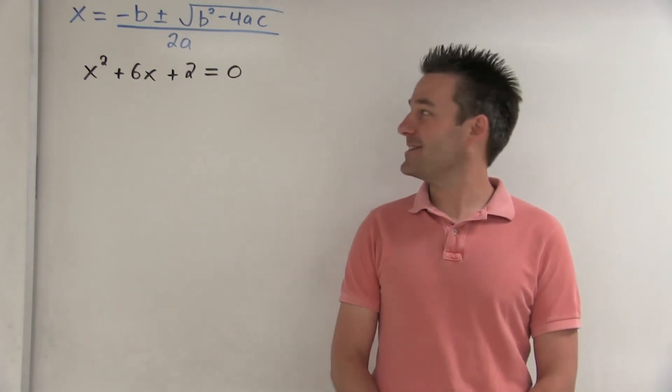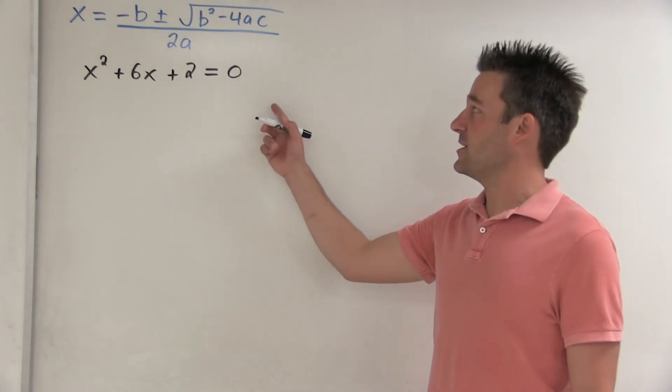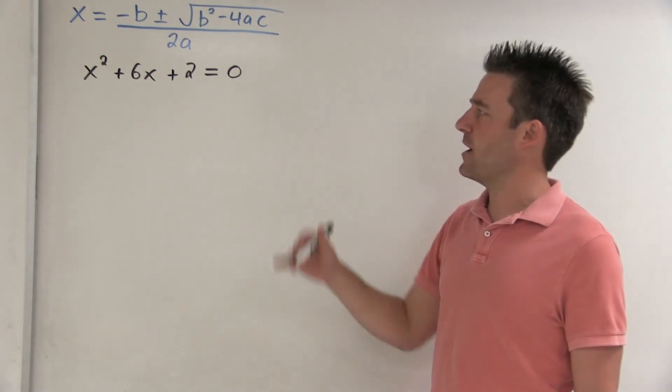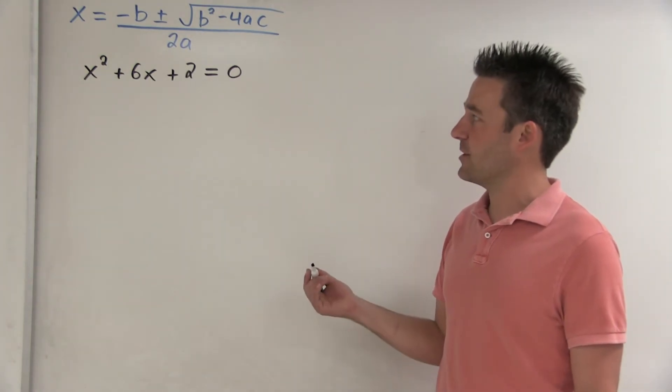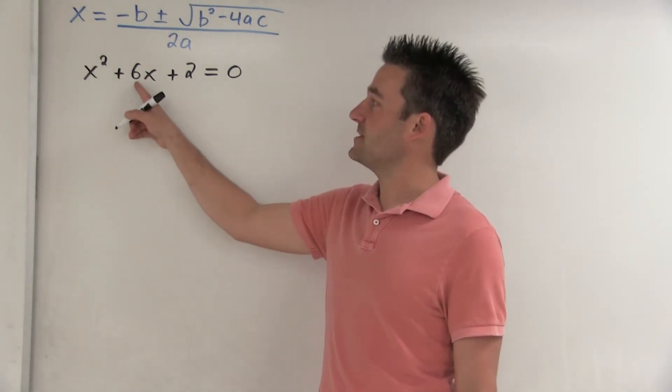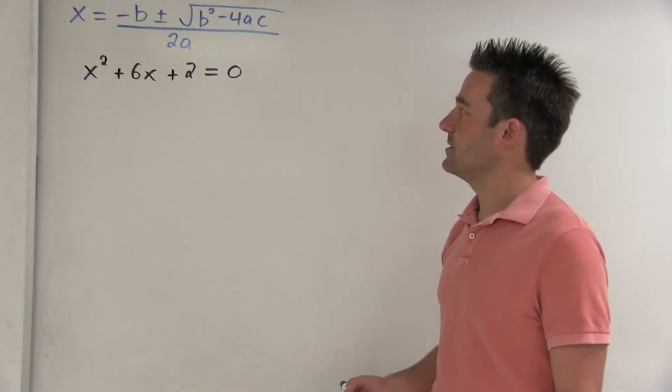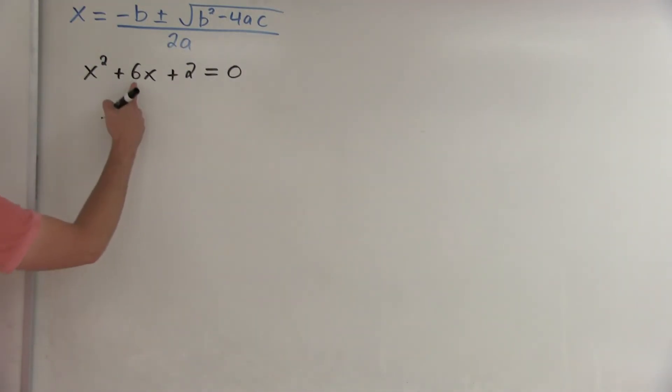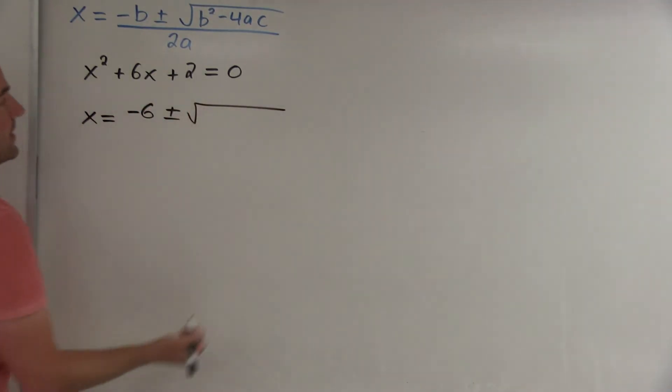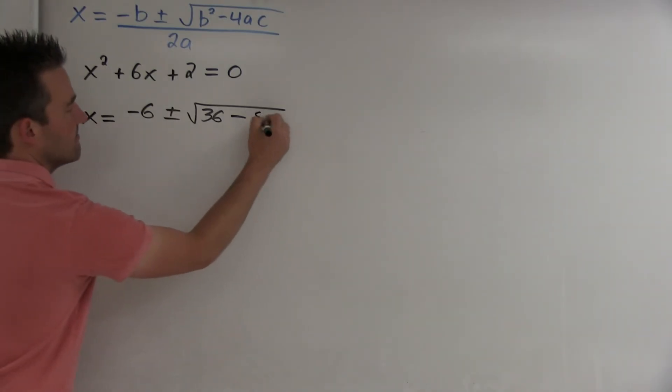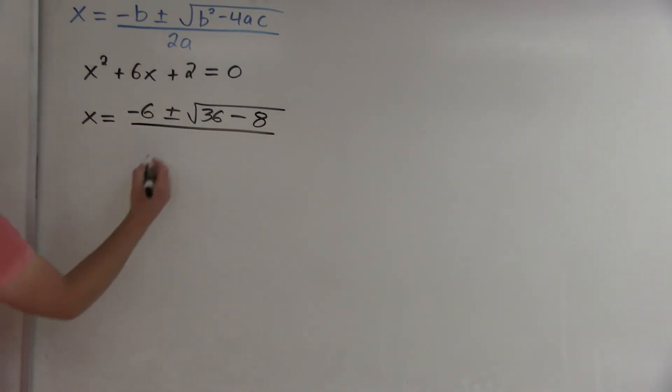Let's look at another example. In this example, we're already ready to use the quadratic formula because the equation is set equal to 0. So a is 1, b is 6, and c is 2. So let's use the formula. Negative b would be negative 6. b squared is 36, minus 4 times 1 times 2, that's 8. And 2a will be 2 times 1.